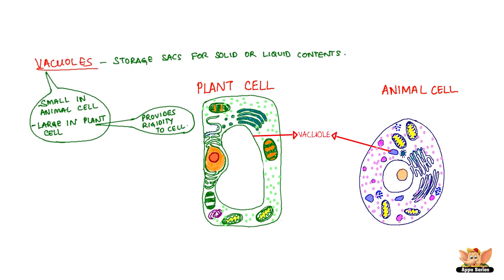Vacuoles are storage sacs for solid or liquid contents. Animal cells have small vacuoles, while plant cells have large central vacuoles which provide rigidity to plant cells.